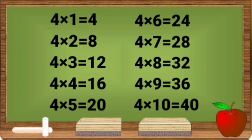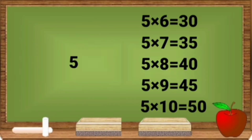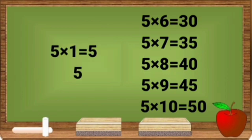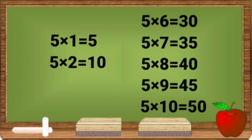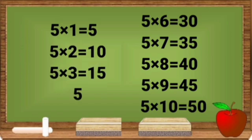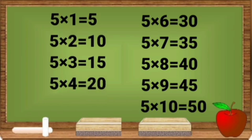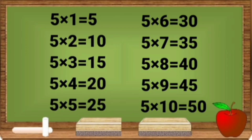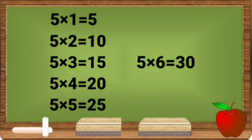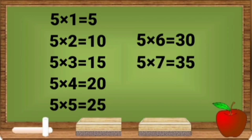5 1s are 5. 5 2s are 10. 5 3s are 15. 5 4s are 20. 5 5s are 25. 5 6s are 30.